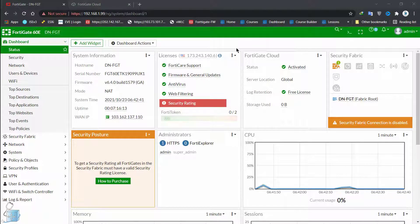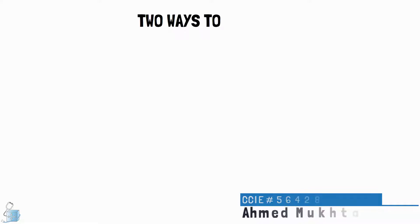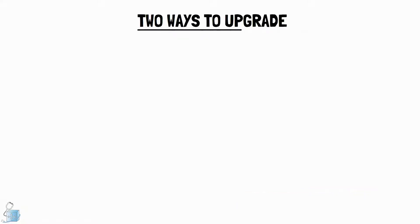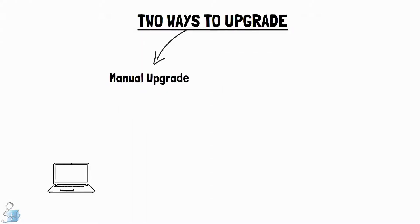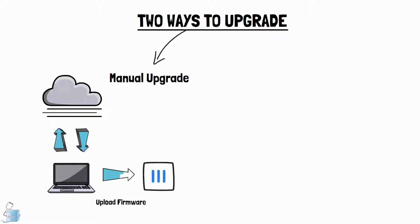Before we move on towards the design of our home network and how we're going to deploy this FortiGate device, let's first upgrade this FortiGate device to the latest version available. There are basically two ways you can upgrade your FortiGate device. One is the manual way, in which you go to the cloud, download the image, and then upload that image to the FortiGate device.